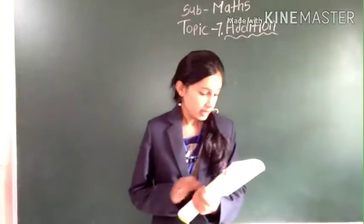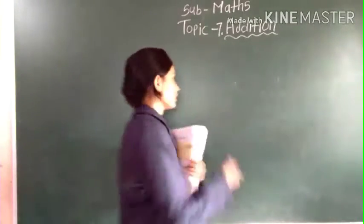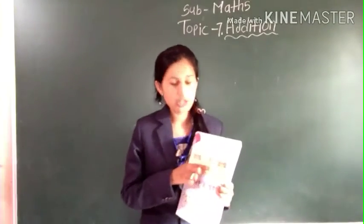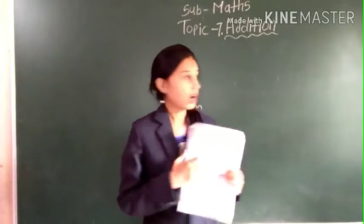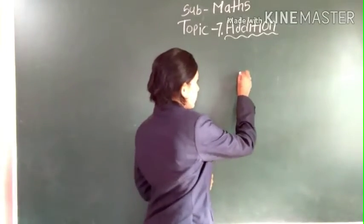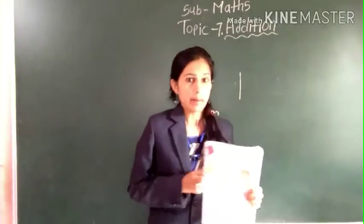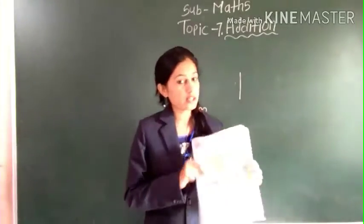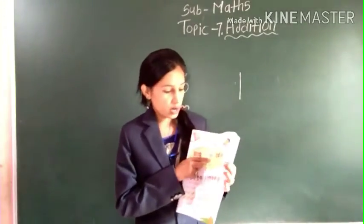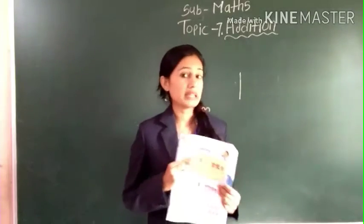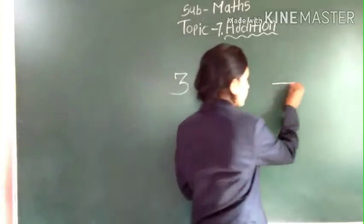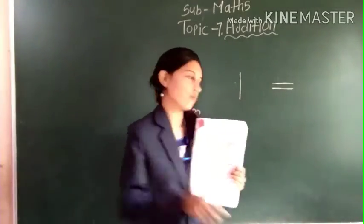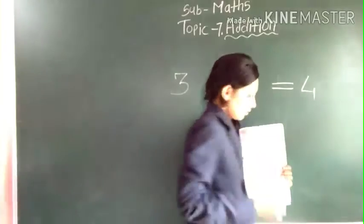First, there are 3 puppies. How many puppies are there? 3 puppies. There are 3 puppies, and 1 more joined in. We added one more puppy. How many puppies were there before? 3 puppies. And now one more puppy was added.